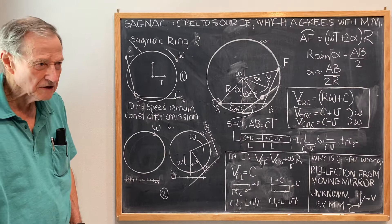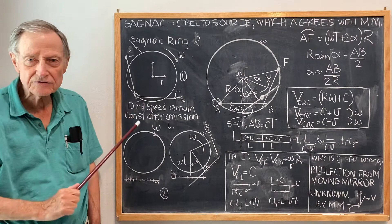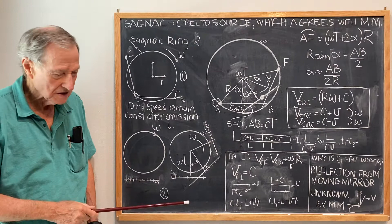In this video, I'm going to analyze the Sagnac experiment and show that it proves that the velocity of light C is relative to its source, which agrees with the Michelson-Morley experiment.